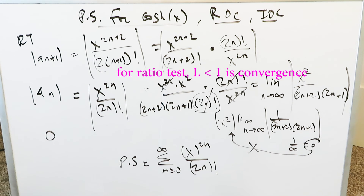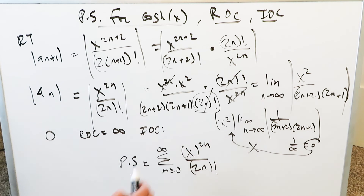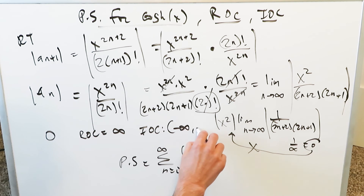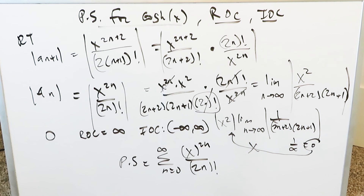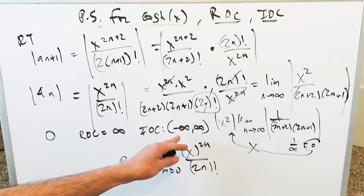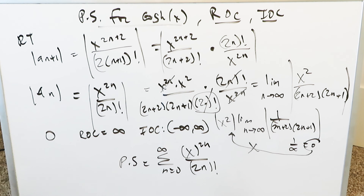Since the limit is 0 for any value of x, any value gives convergence. The radius of convergence is infinity. The interval of convergence is all x: minus infinity to infinity. The hyperbolic cosine power series converges for every value in its entire domain — it is a very convergent function.